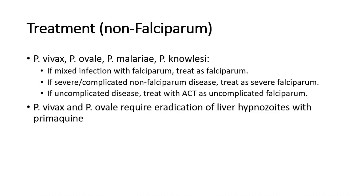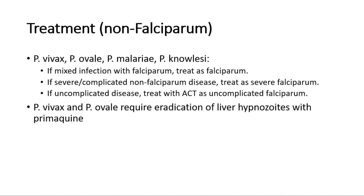For non-falciparum malaria — which includes Plasmodium vivax, ovale, malariae, and knowlesi — if there is mixed infection with falciparum, we treat as falciparum. If it is a non-falciparum disease but severe or complicated, we also treat as severe falciparum with artesunate. For uncomplicated non-falciparum disease, we treat with ACT as for uncomplicated falciparum. Chloroquine can also be used for non-falciparum disease. In addition, Plasmodium vivax and ovale require eradication of liver hypnozoites with primaquine. However, there is a risk of hemolysis with primaquine in patients with G6PD deficiency, so we must screen for G6PD before giving primaquine.